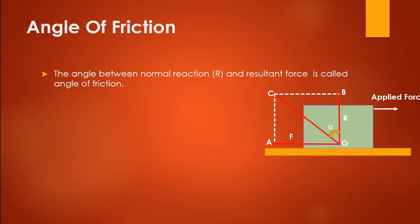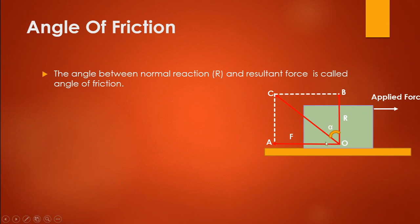We will cover resultant vectors properly in the vector chapter. Just remember: when you apply force in two directions there will be a resultant force in some other direction. Here, the normal reaction is one force and frictional force is another; OC is the resultant. The angle between the normal reaction and the resultant force OC is alpha — the angle of friction.